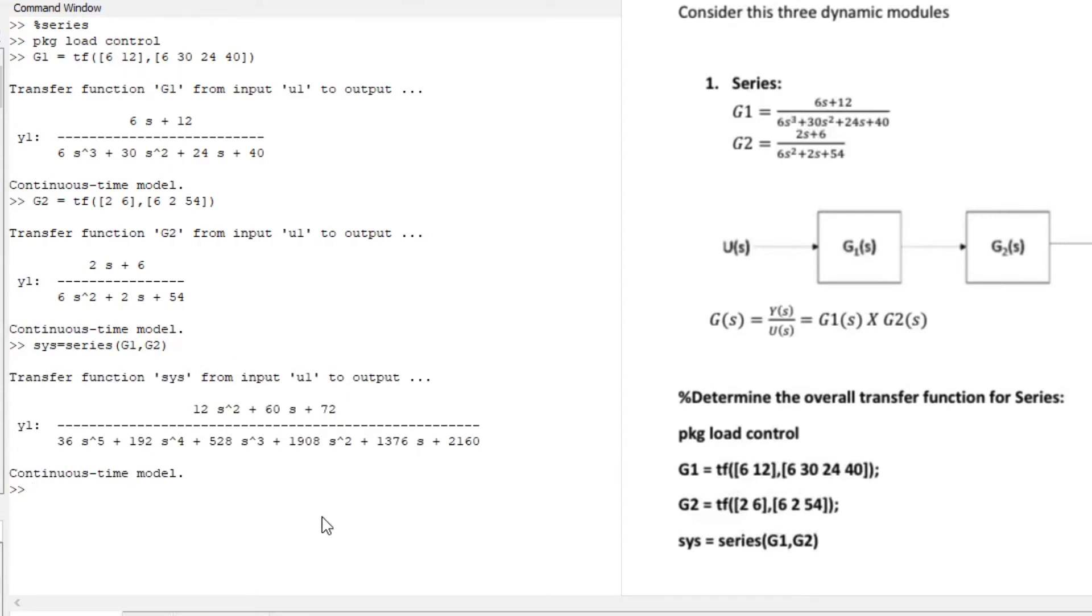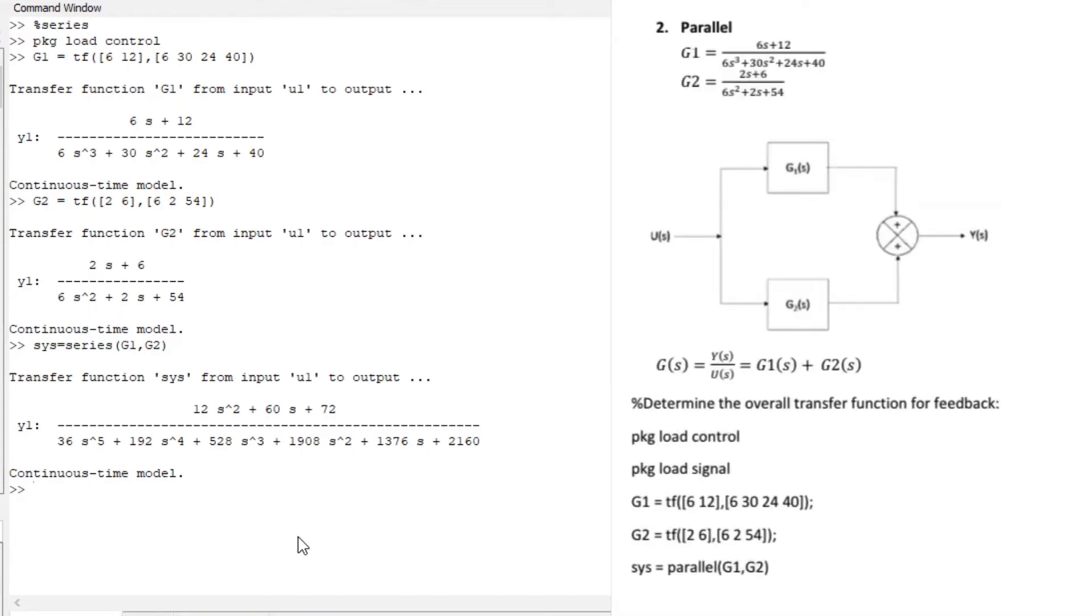So what basically Octave just did is it found the overall transfer function for us if our system is operating in series. So now what happens if our system is operating in parallel? I want to manually do everything so you guys can see the catch. So we are now working with parallel. Octave is very sensitive with spelling, do not mind me.